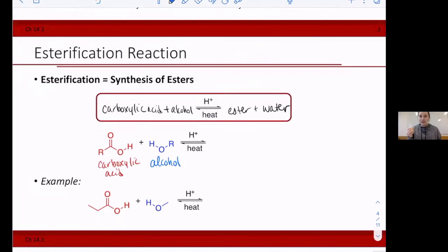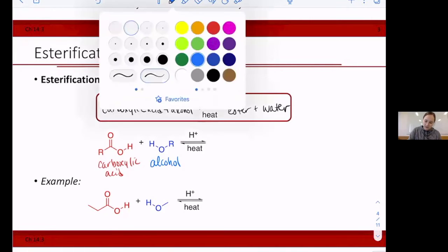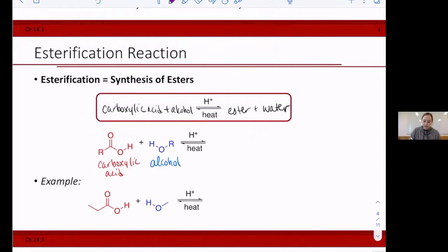When you add an acid catalyst and heat, you can undergo an esterification reaction. In this reaction, we kind of do a flip-flop of where things are. So let's pick a new color.